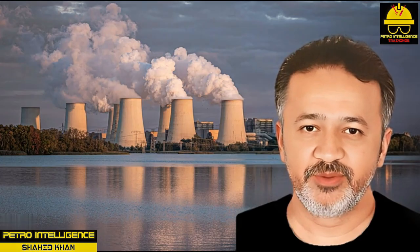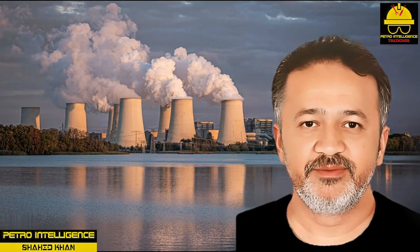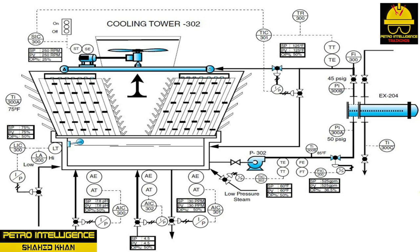Water distribution system problems: the water distribution system has a variety of components including a series of valves, pans, water distributors, and pan covers that can be damaged. Pipe leaks are not uncommon and can quickly lead to larger problems. If the water distributors become dislodged from the pan, uneven amounts of water can flow over the fill before it has time to contact air flowing through the tower.